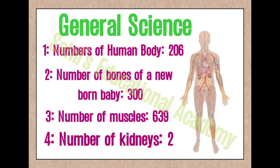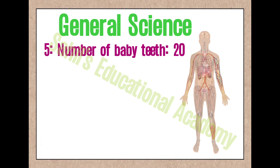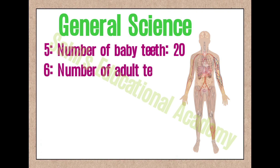4. Number of kidneys: 2. 5. Number of baby teeth: 20. 6. Number of adult teeth: 32.